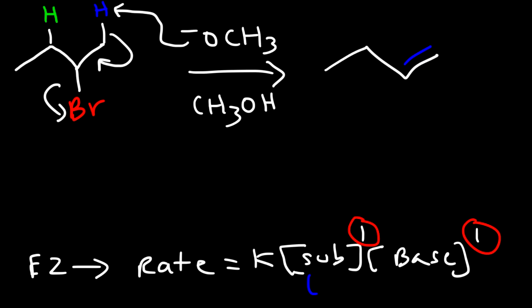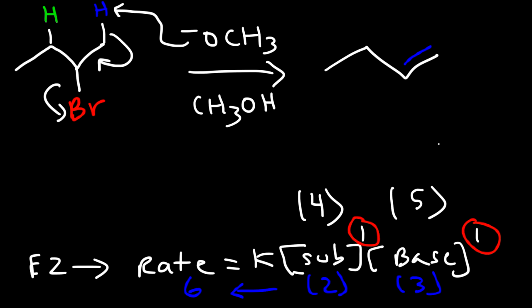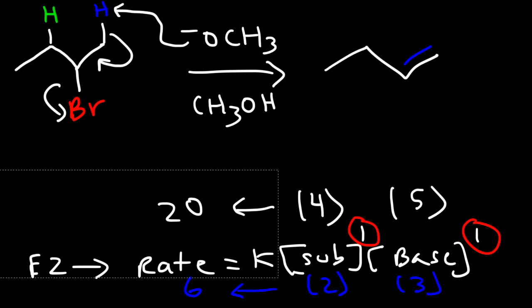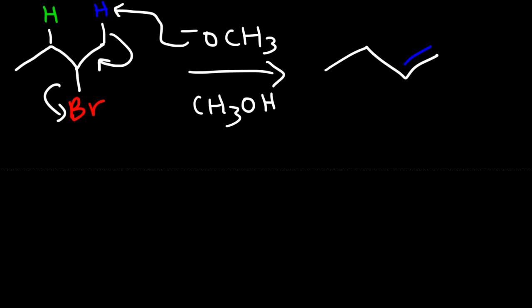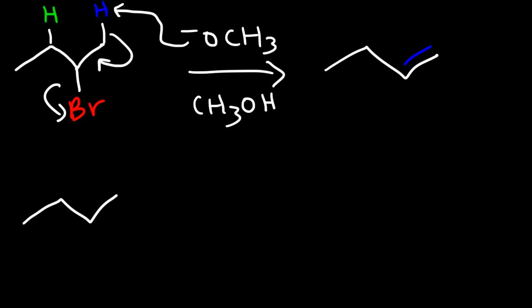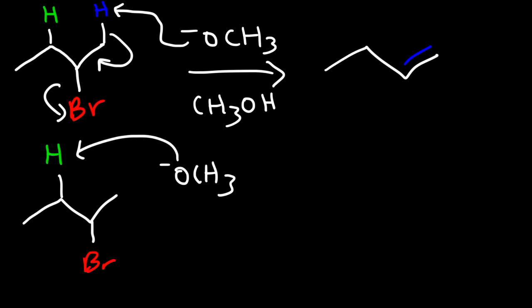So if you double the concentration of the substrate and triple the concentration of the base, the rate increases by a factor of 6. If you quadruple the substrate concentration and increase the base concentration by a factor of 5, the rate increases by a factor of 20. Now, if methoxide goes for the green hydrogen, we're going to get 2-butene as opposed to 1-butene.